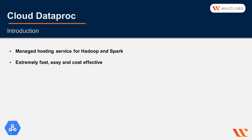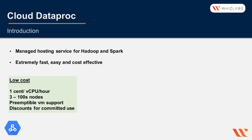Cloud Dataproc automation helps you create clusters quickly, manage them easily, and take them offline to save costs. It's extremely cost-efficient to run these large services on GCP, and preemptive instances are supported. Preemptive VMs are cheap, short-lived compute instances that offer the same machine types and options as regular compute instances, but only last up to 24 hours.